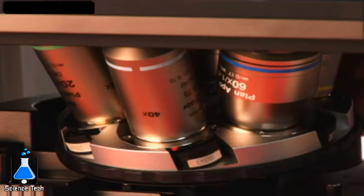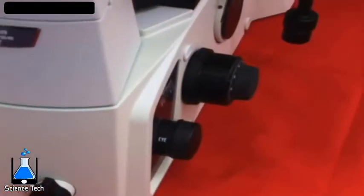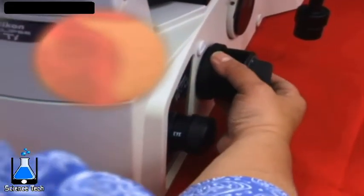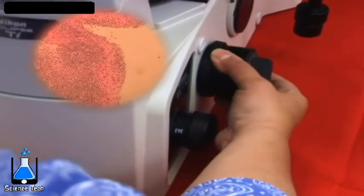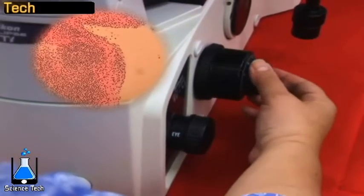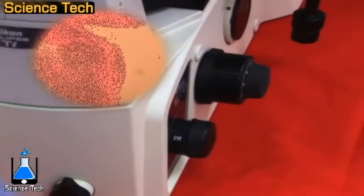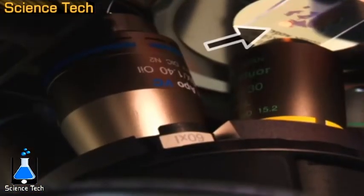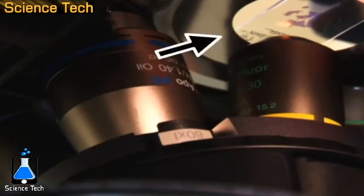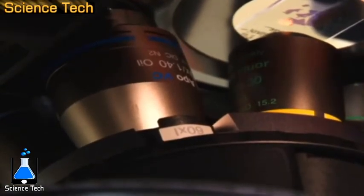Next, focus the low powered objective by moving it in the Z direction using an initial adjustment of the coarse adjustment knob and then rotating the fine adjustment knobs to bring the object in sharp focus. Take care not to hit the slide or stage with the objective as this could damage the lens.